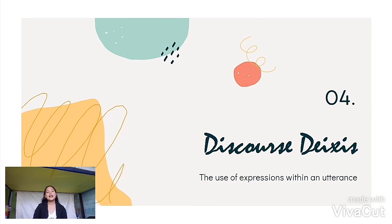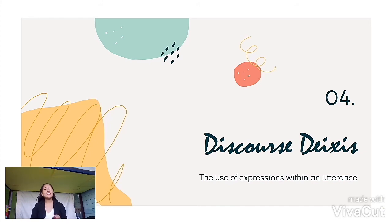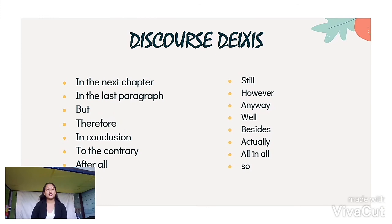Our last element is called discourse diaccess. Discourse diaccess is also called text diaccess. It refers to the use of expression within an utterance. It is used in conversation and in discourse practices. So when diaccess is used for rhetoric purposes, that is called discourse diaccess.